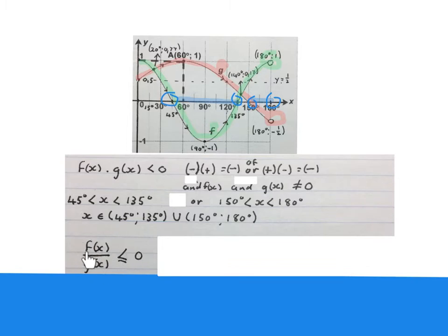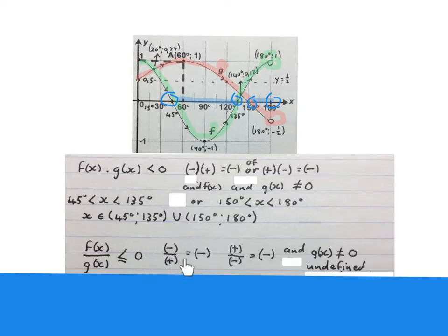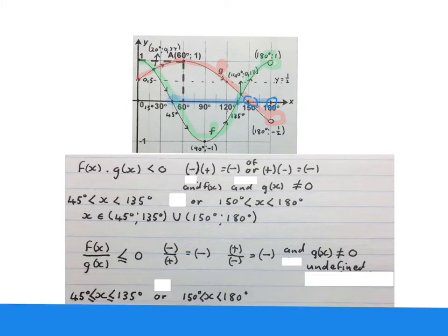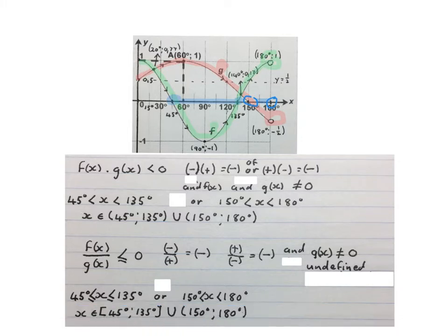The next question asks where is f of x divided by g of x smaller than or equal to zero. A negative divided by a positive gives negative; a positive divided by a negative gives negative. g of x is not allowed to be zero — it would make the expression undefined. There is an equal sign here but I am not allowed to make g of x equal to zero. The answer is x is bigger than or equal to 45 degrees and x is smaller than 135 degrees, or x is bigger than 150 degrees and x is smaller than 180 degrees. You may write the answer in interval notation.